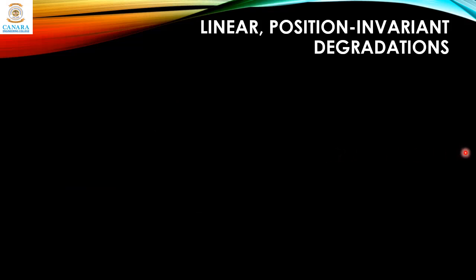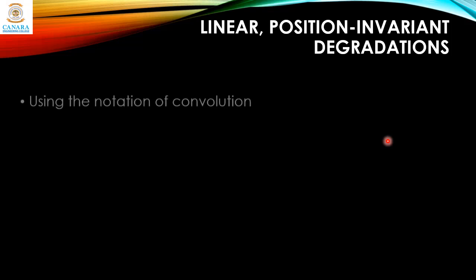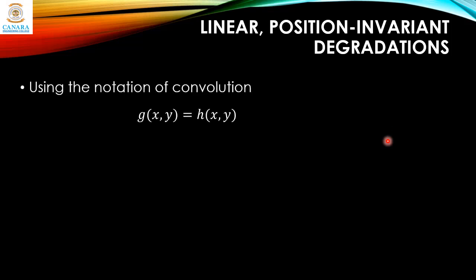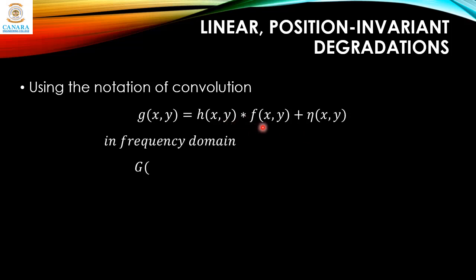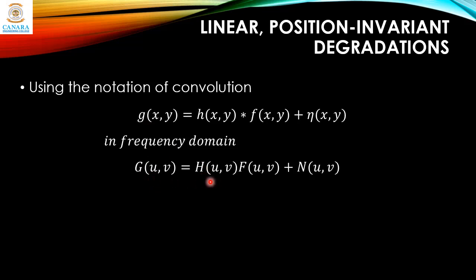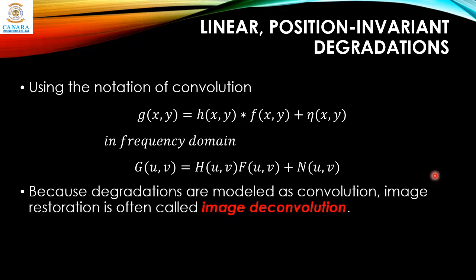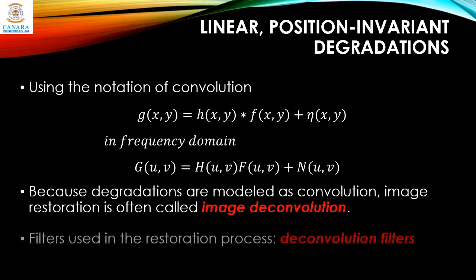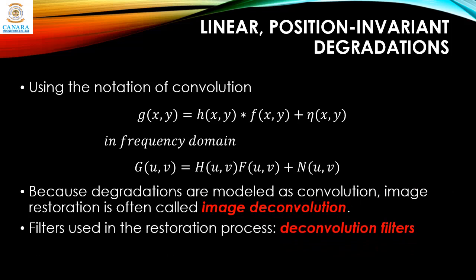The noise term η(x,y) is random and assumed to be independent of position. Using familiar convolution notation: g(x,y) = h(x,y) ∗ f(x,y) + η(x,y). In the frequency domain: G(u,v) = H(u,v)·F(u,v) + N(u,v). Note that in the spatial domain it is convolution, while in the frequency domain it is multiplication. Because degradations are modeled as convolution, image restoration is often called image deconvolution, and the filters used are called deconvolution filters.